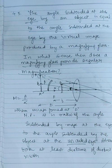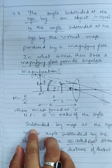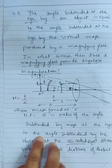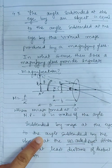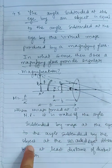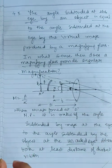When the image is formed at infinity, it is the ratio of the angle subtended by the image at the eye to the angle subtended by the object at the unaided eye, with the object placed at D.